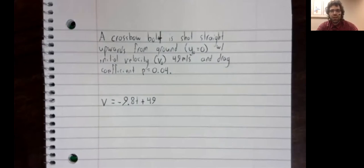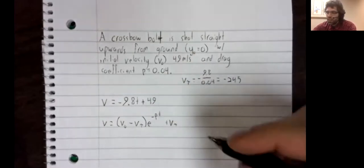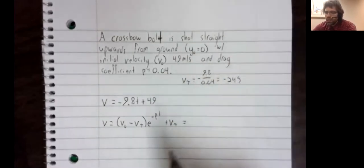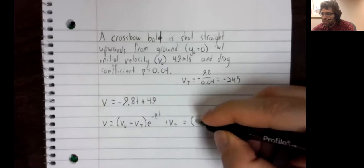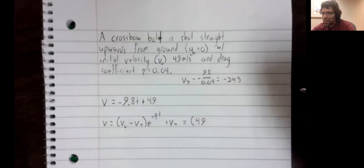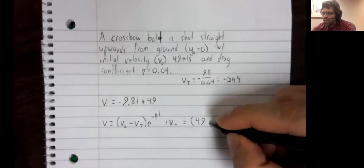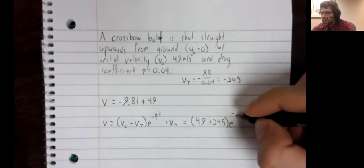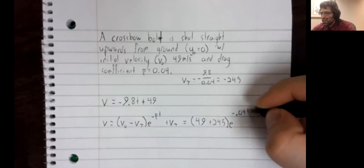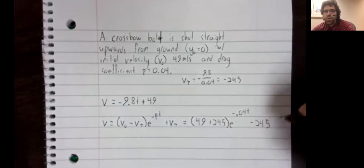Velocity with air resistance, well, we'll take the constants that appear in this example and we'll plug them into the form we found. Let's see, 49 minus negative 245 E to the negative rho T plus terminal velocity.